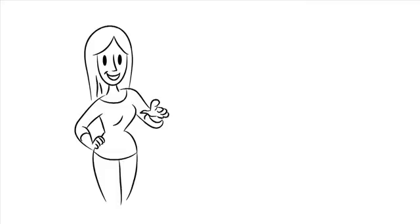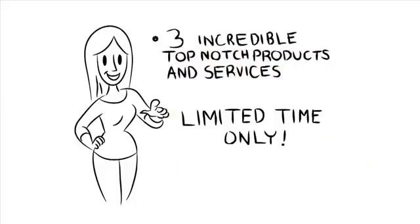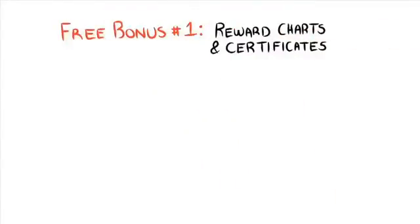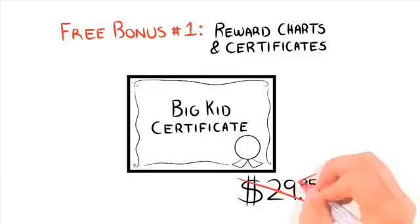Now to make this an even sweeter deal for you, I've included three incredible top-notch products and services as a bonus with this package. However, this deal will only last for a very limited time. Free bonus number one: This guide comes with free reward charts and certificates. This is a fun way for you and your child to track their progress. Using charts with different cartoon characters, your child will become motivated to quickly complete their chart. You can then simply print out their own customized big kid certificate. This is a $29.95 value, but yours absolutely free today.